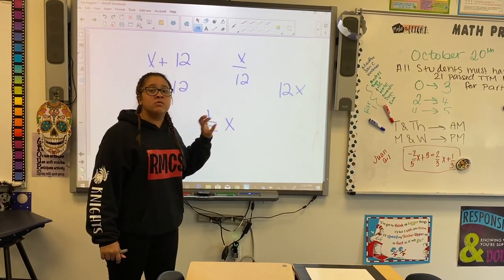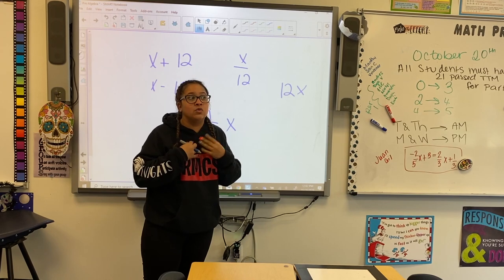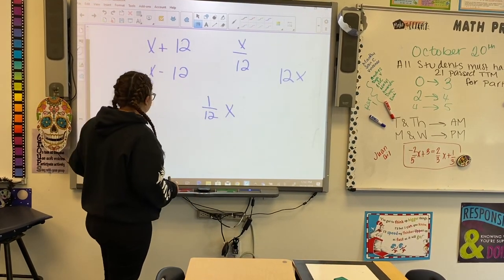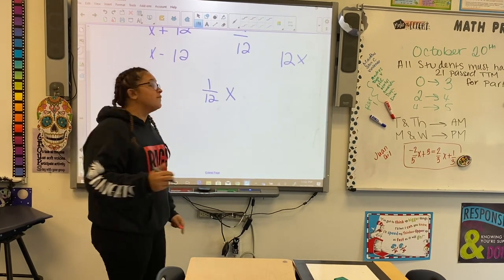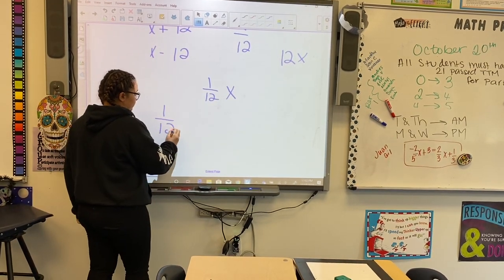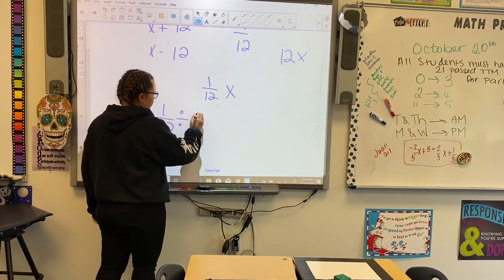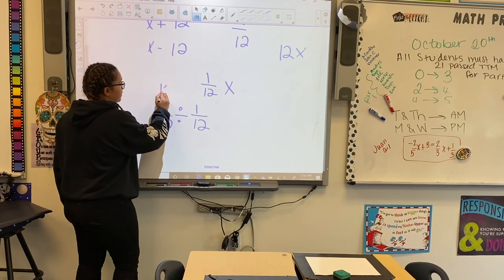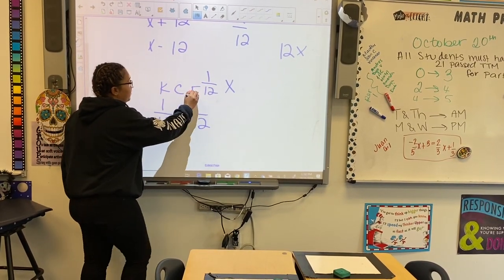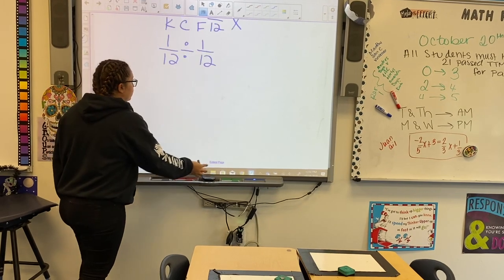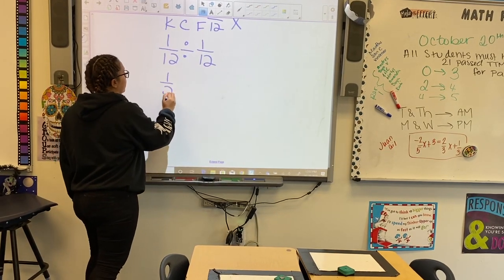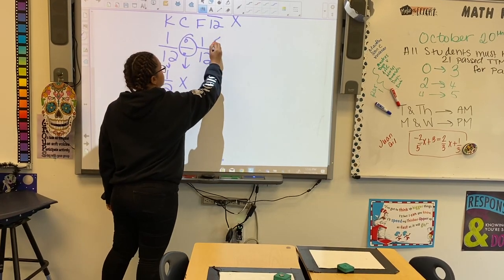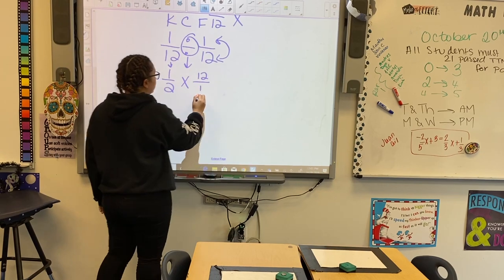So since this is a multiplication problem, the way that we have to get rid of it is division, which is where you have to remember that when we are dividing fractions, what we're really doing is we're doing keep, change, flip, and we are multiplying the reciprocal. So it would really be 1 over 12 times 12 over 1.